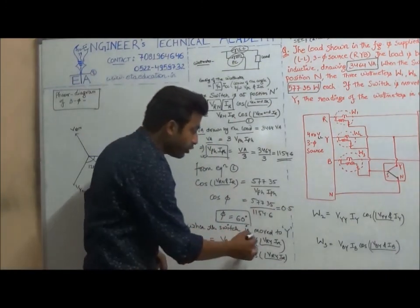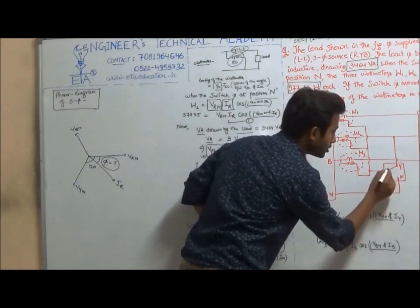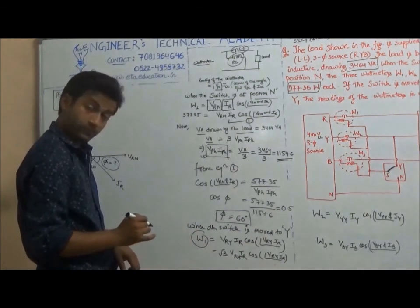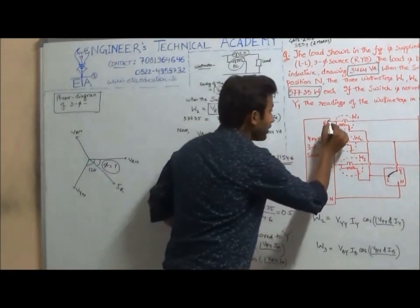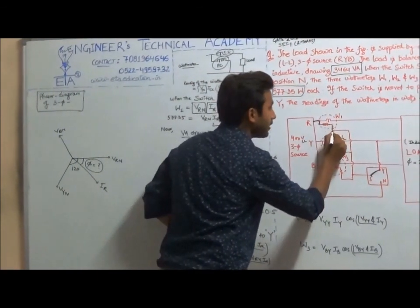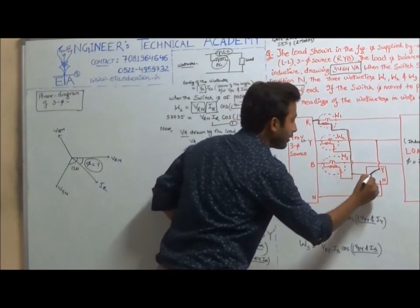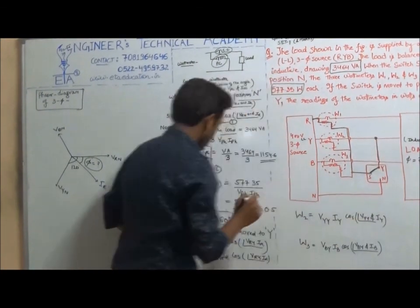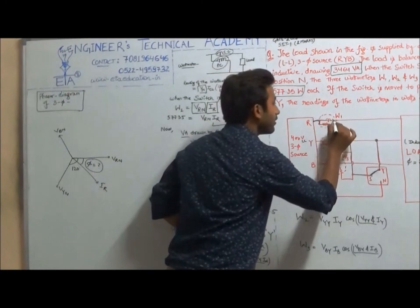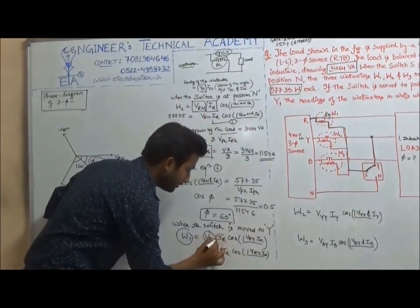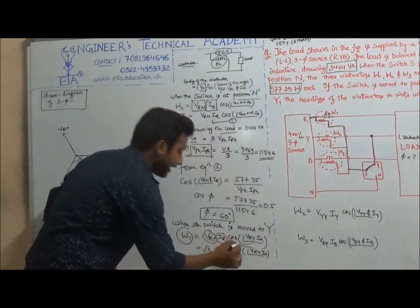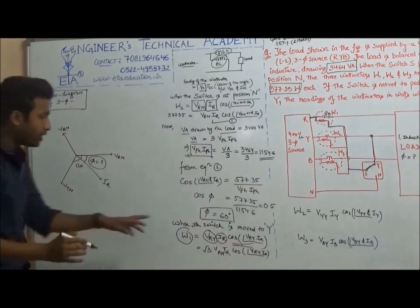Now when the switch is moved to position Y, what will be the reading of watt meter W1? The pressure coil of W1 is connected from R to Y, so the pressure coil will read VRY. The current coil will read IR. We need to find the angle between VRY and IR, which can be determined from VRY.